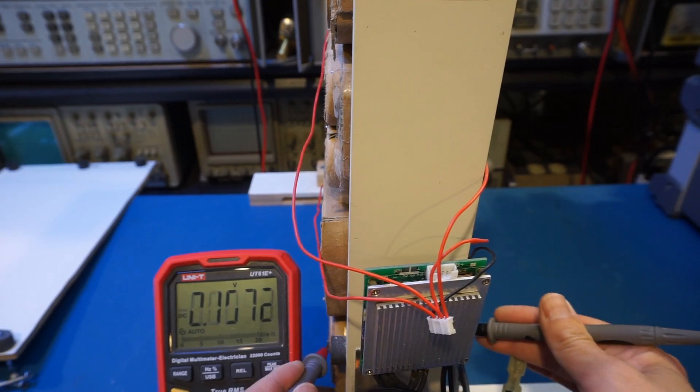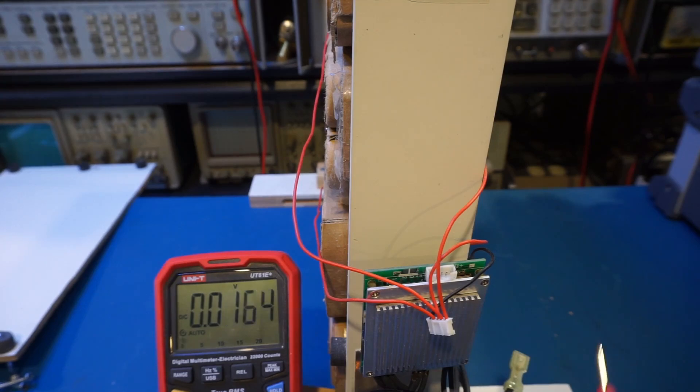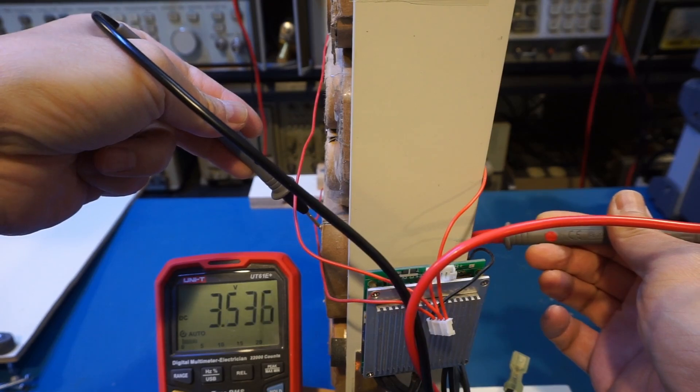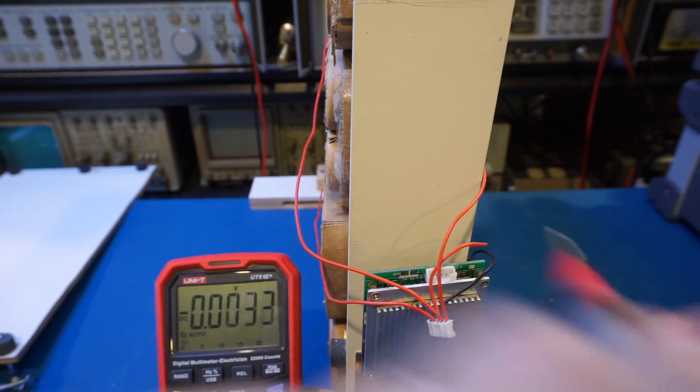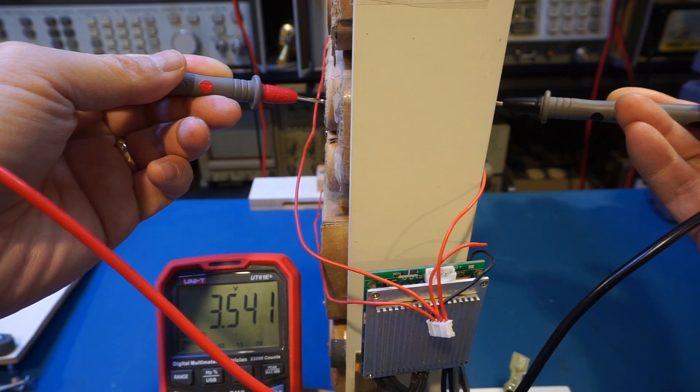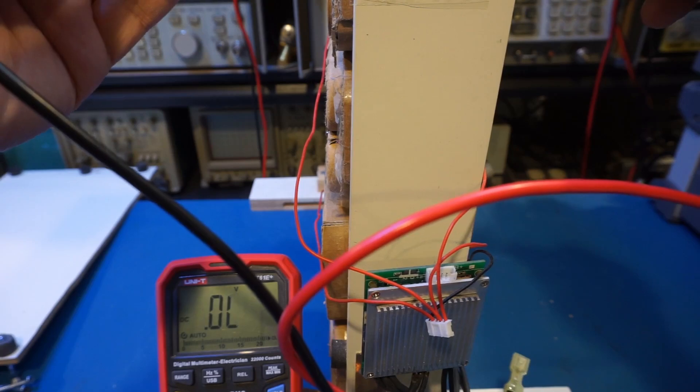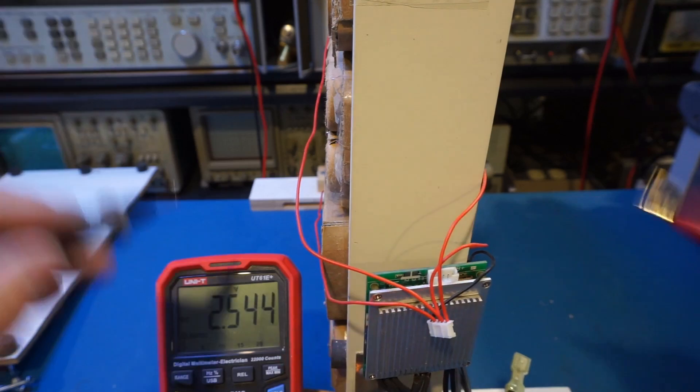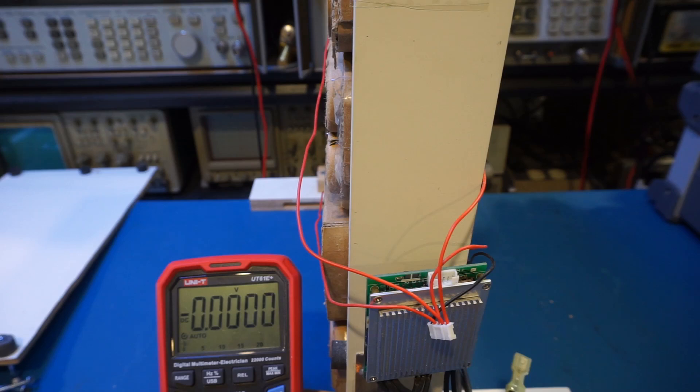So let's see. The first bank, 3.5V. Second, there's a 20mV difference already. Okay, the third one. Definitely there's some discrepancies. And the last one here. So you can see that they are actually not balanced that well. There's almost a 30mV difference between the top bank and the bottom bank. But overall, I think it served its purpose.